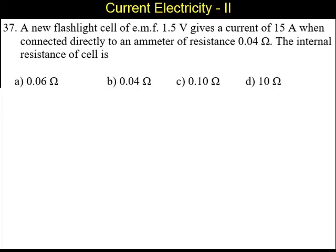The internal resistance of the cell is: A) 0.06 ohms, B) 0.04 ohms, C) 0.1 ohms, and D) 10 ohms.